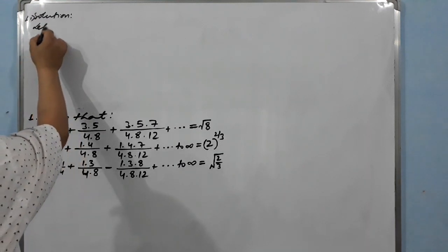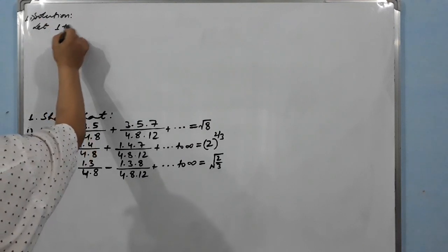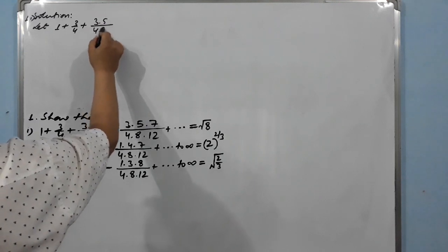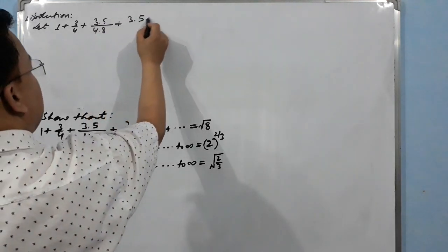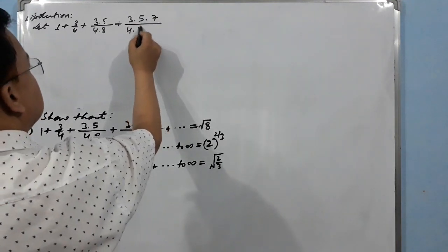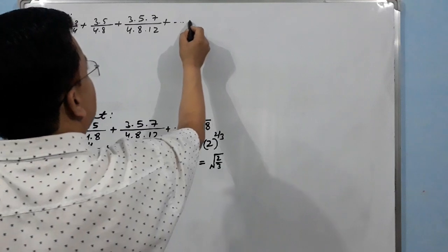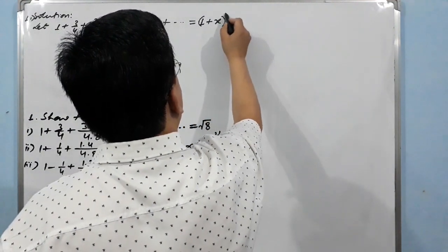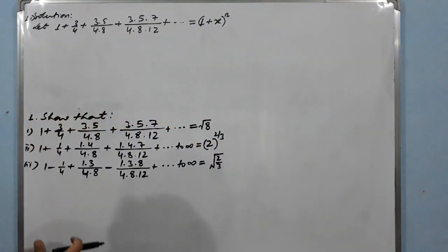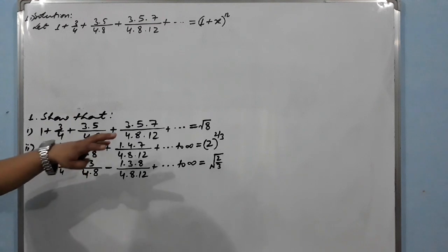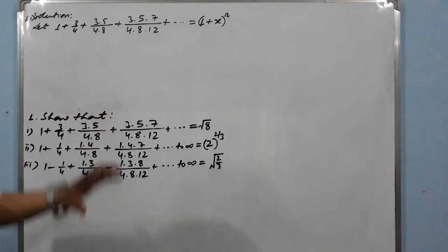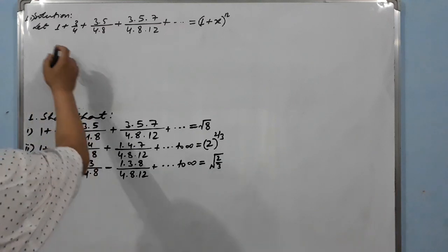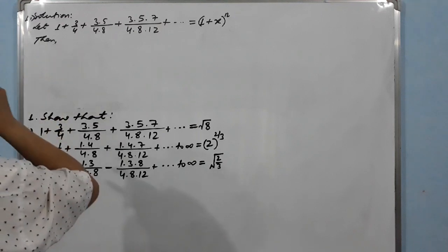Solution. Let's suppose 1 + 3/4 + (3·5)/(4·8) + (3·5·7)/(4·8·12) + ... = (1 + x)^n. We will try to prove this using the binomial series, that is, the Binomial Theorem for any index.